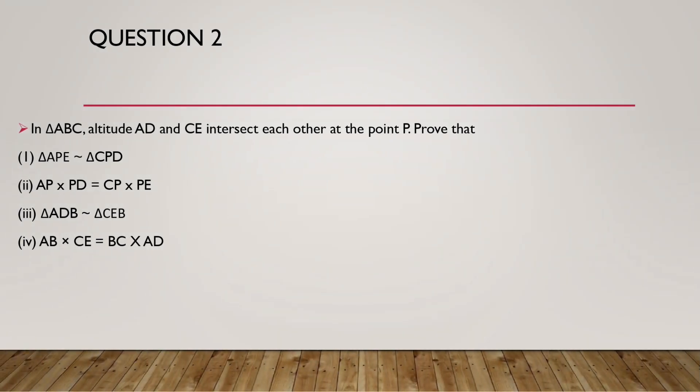Question 2. In triangle ABC, altitudes AD and CE intersect each other at point P. Prove that: a) triangle APE is similar to triangle CPD, b) AP multiplied by PD equals CP multiplied by PE, c) triangle ADB is similar to triangle CEB, d) AB multiplied by CE equals BC multiplied by AD.